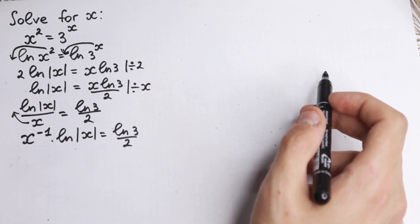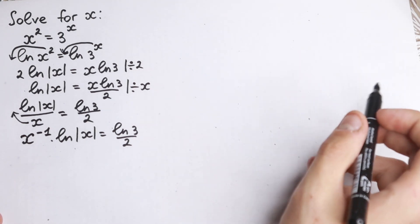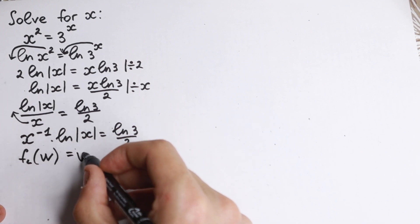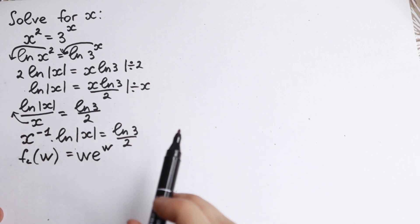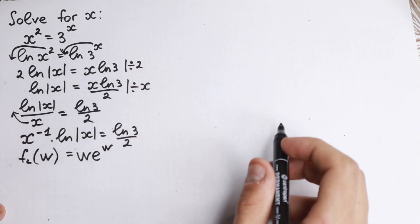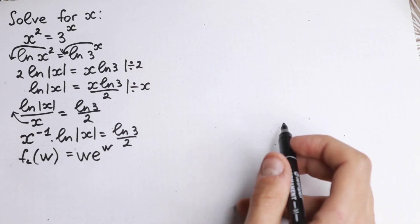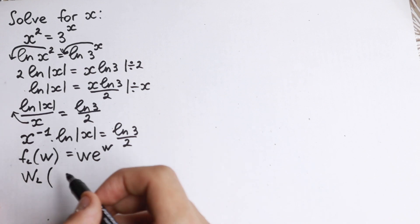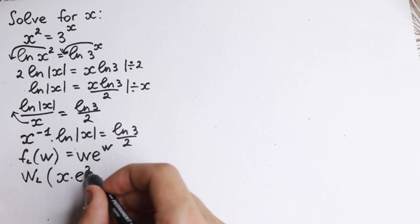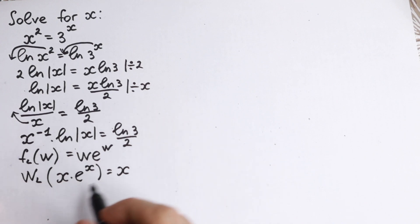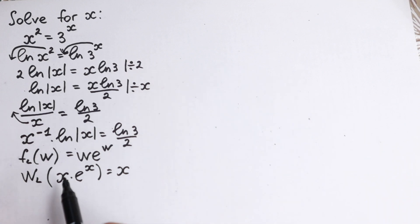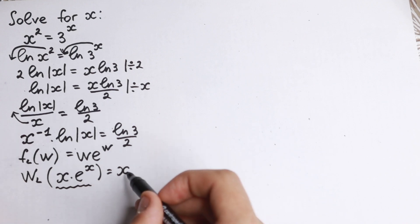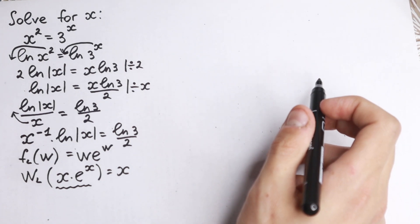To go further, we need to know about the Lambert W function. The Lambert W function is defined as: if F equals W times e to the power W, then applying the Lambert W function to an expression of the form x times e to the power x gives back only x. So if we apply the Lambert W function to that form, with the same element appearing in both the base and the power, we recover x.